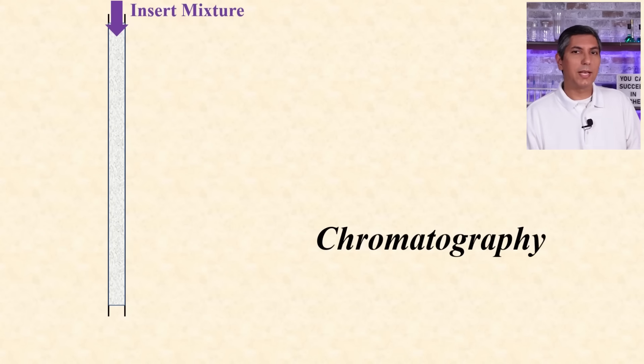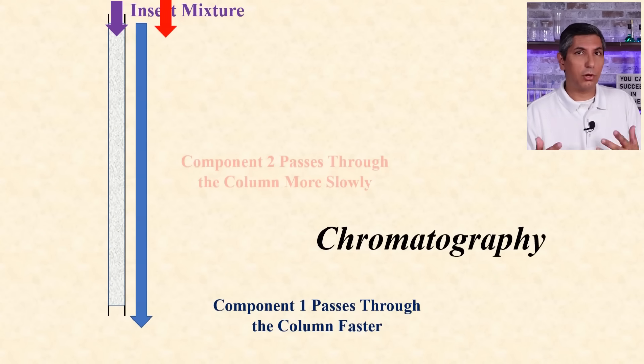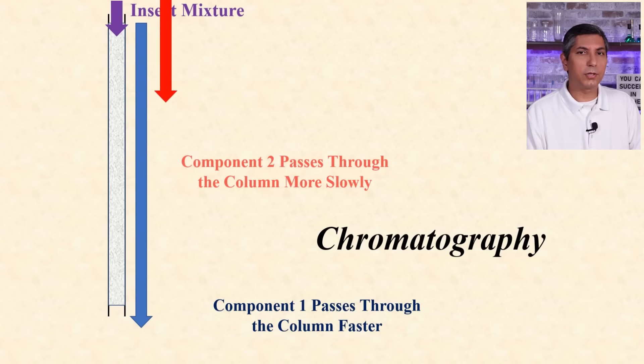Chromatography involves a mixture passing through a column. Some of the components adhere more strongly to the column, so they pass through it more slowly. Other components don't adhere as well to the column, so they pass through more quickly. The column itself is sometimes called the stationary phase, and the substances that pass through the column are called the mobile phase.